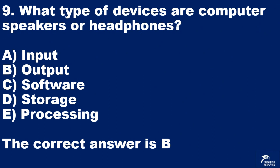Question 10. What type of device is a computer printer? A: input. B: output. C: software. D: storage. E: processing. The correct answer is B.